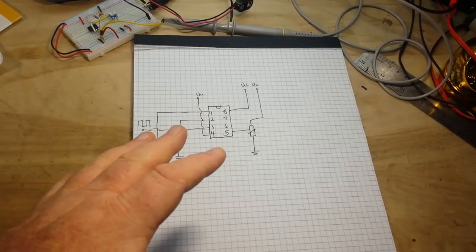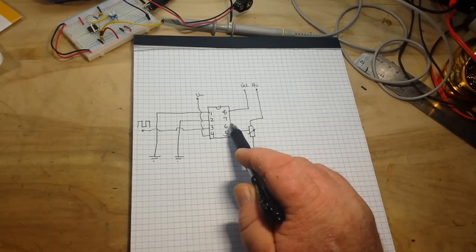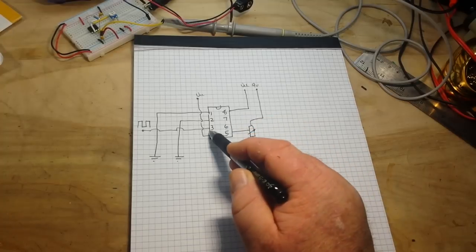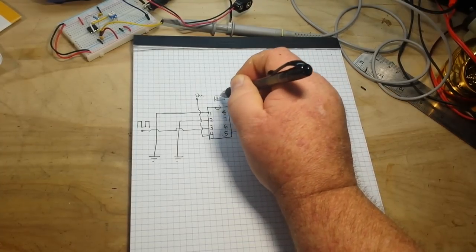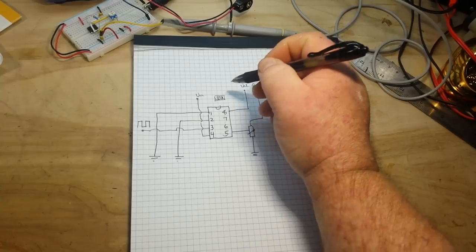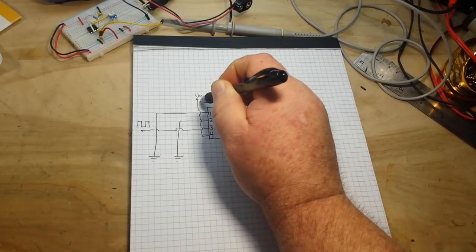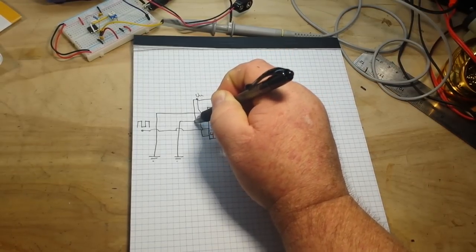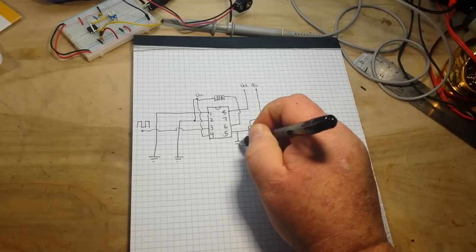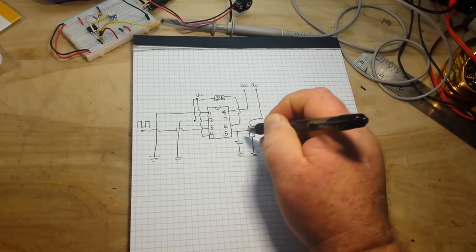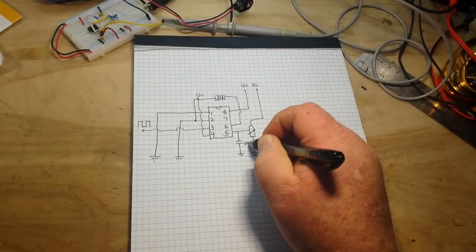Now, pin 6 is our threshold pin. Okay, that's kind of our off pin as opposed to pin 2 our trigger pin. So when pin 6 goes above 2 thirds of our supply voltage, our output pin goes low. And we're going to tie that to a resistor. In this case, it will be 33k. And we will bring it over here. And we will also tie that to pin 2. Now, we're just going to take a capacitor here to smooth this out. We'll use, I don't know, 100 nanofarad, I think, is what I put in there.